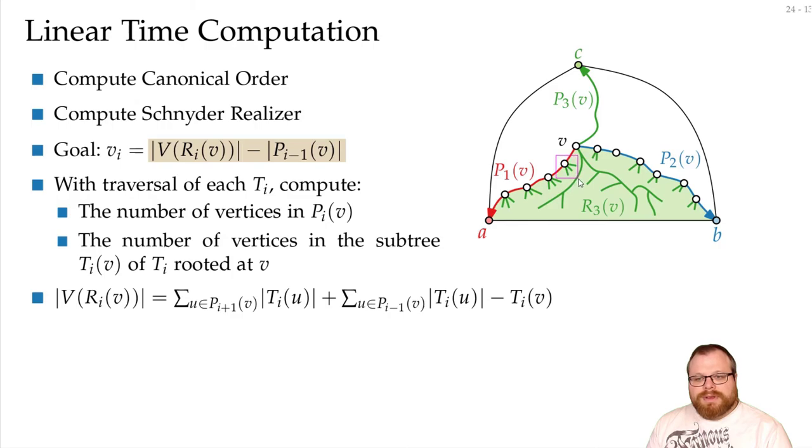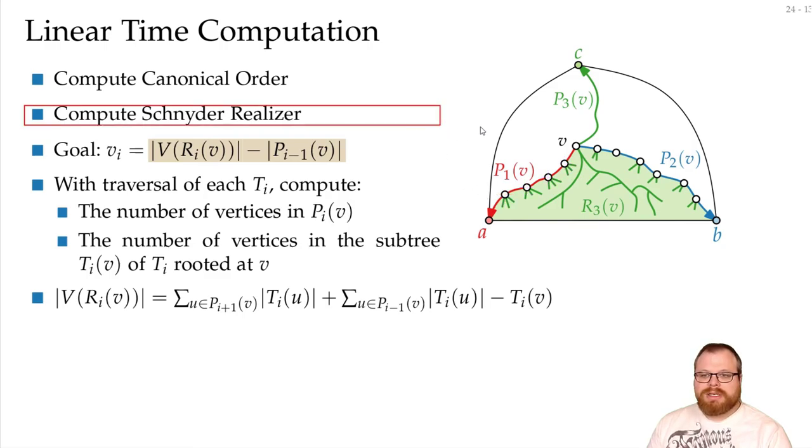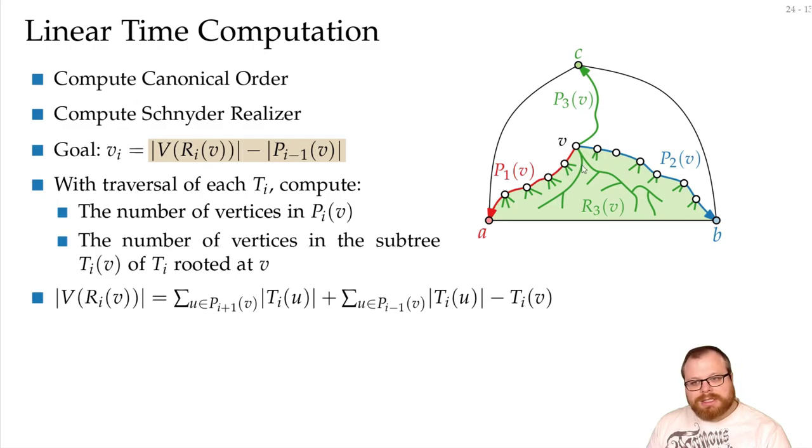For this vertex, instead of only remembering how many vertices are in my subtree, we can remember the whole sum here. We can remember how many vertices lie in this plus this plus this plus this subtree. Then when we get here, we only have to ask what was the sum, get it, and save the sum of everything on this path.